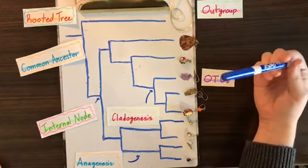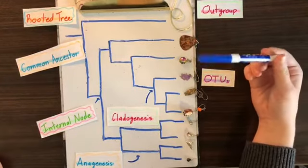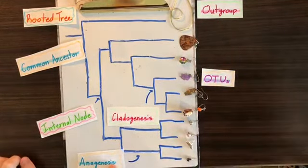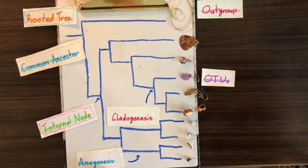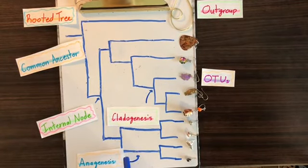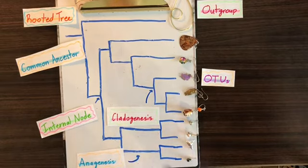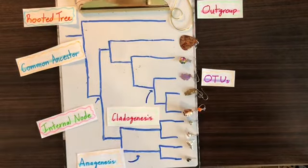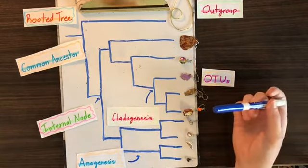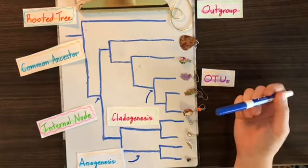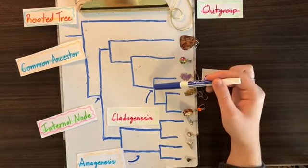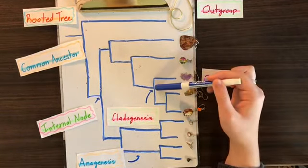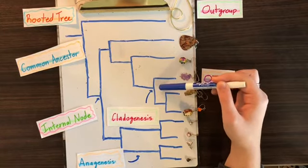Now there are two types of evolutionary change going on here. The first one is anagenesis. This is evolution within a lineage over time and that is designated as a straight line as you can see right here. We also have cladogenesis, which is the splitting of a lineage over time, and as the name suggests it creates a clade of OTUs.